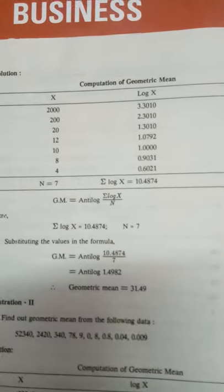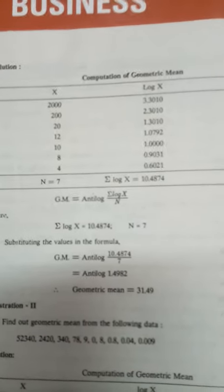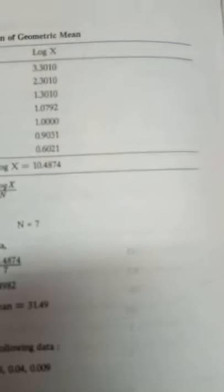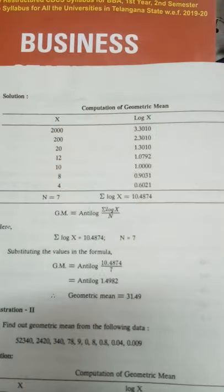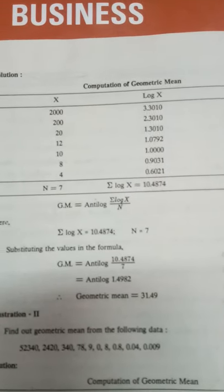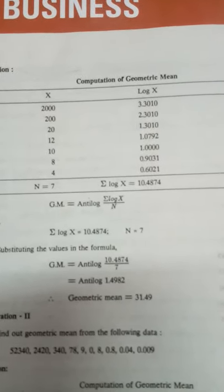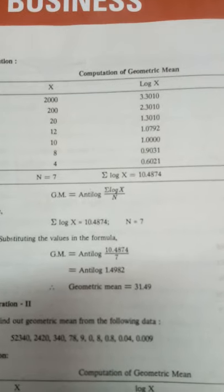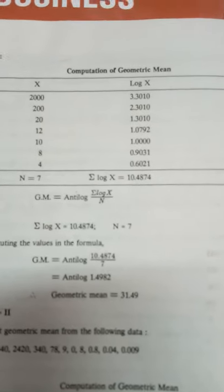And for 200, it is same. 200 means 3 numbers are there. 1, 2, 3. 3 minus 1 means 2.3010. 20 means 2 are there. 1 point, it will become 1.3010. Very interesting. 2 numbers are there. 2 minus 1 means 1 point.